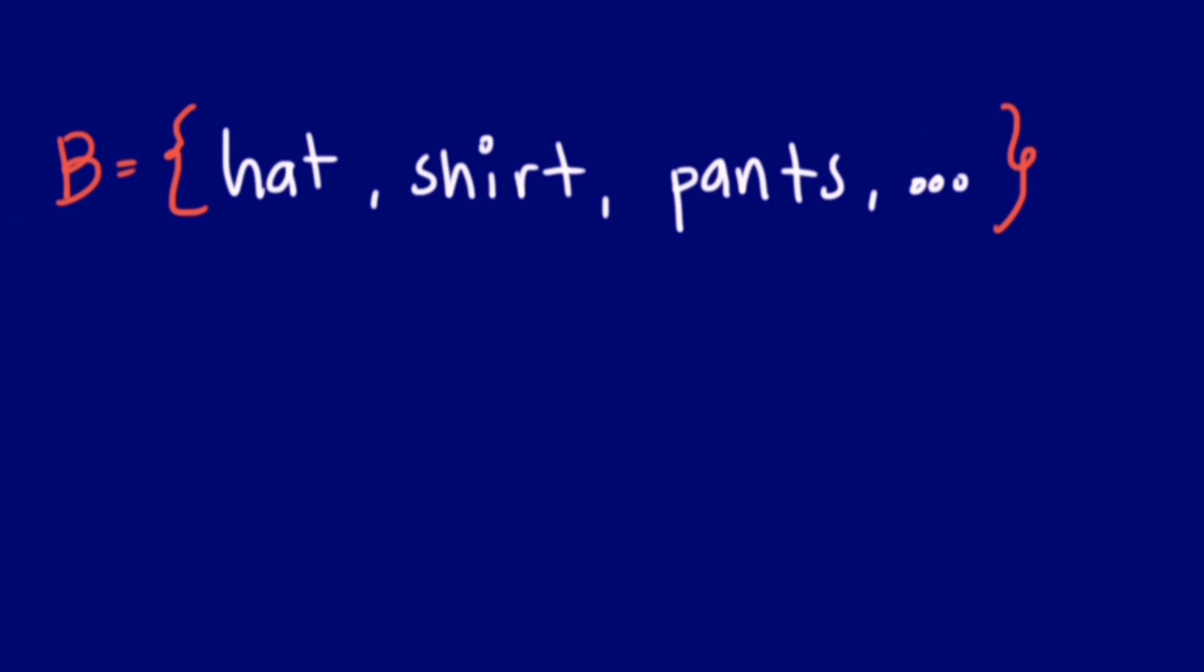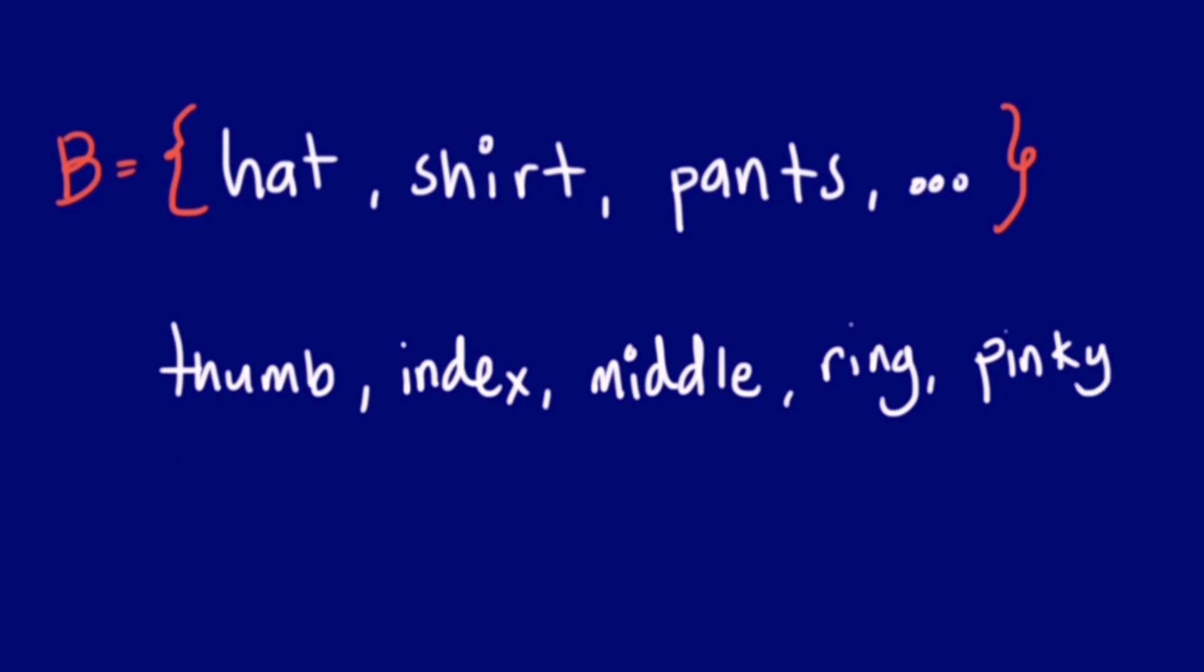Let's try another one. Let's have the types of the fingers in our hand. We have thumb, we have index, we have middle, we have ring, and pinky. Now we name this set C.